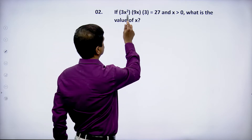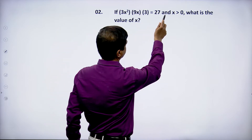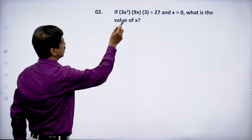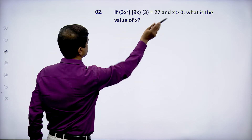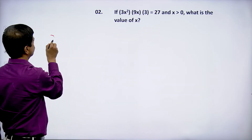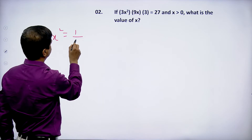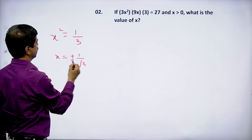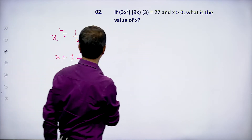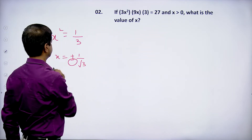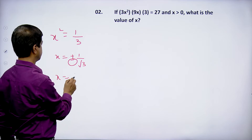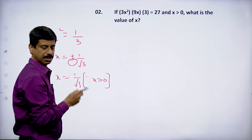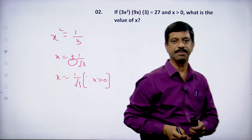Now look at this: 3^(x²) · 9^x · 3 = 27, and x > 0. What is the value of x? So 9x · 3 = 27, 27 gets cancelled, x² = 1/3. So x = ±1/√3, but as x > 0, neglect the negative sign. So x = 1/√3 since x > 0.